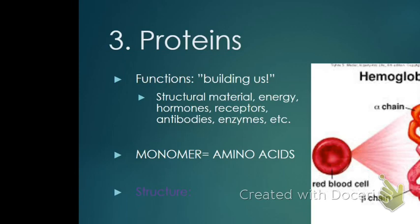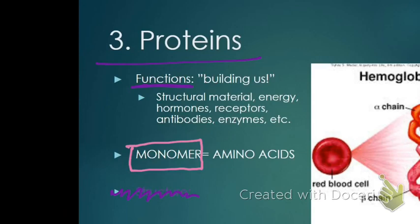The third type of macromolecule is proteins. Their main function is structural material — they essentially build everything we need in our bodies. Your muscles, hormones, receptors, antibodies, your whole immune system — all made up of proteins. The monomer of proteins is amino acids.